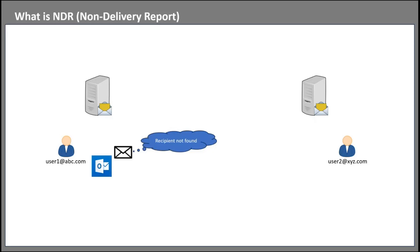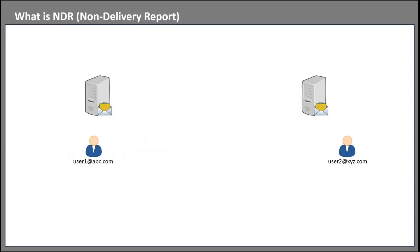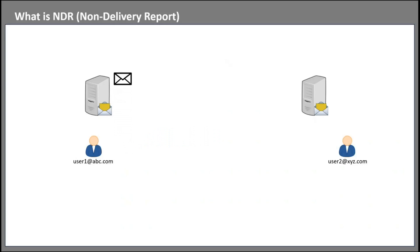Now a question arises: which email server will generate the NDR — the recipient email server or the sender's email server? The answer is, it depends on the scenario. Sometimes the recipient server will generate the NDR, and sometimes it will be the sending server. Let's assume a user from ABC organization is sending an email to a user of another organization, and for some reason this user is blocked from sending emails — it could be because the user is sending bulk emails or his account is compromised. As soon as this user sends an email, the sender's email server will reject it because the user is not allowed to send emails, and the sender's email server will generate the NDR and send it to the user. Similarly, if the tenant is blocked from sending emails, then the sending server will generate the NDR and send it to the users sending emails from this tenant.